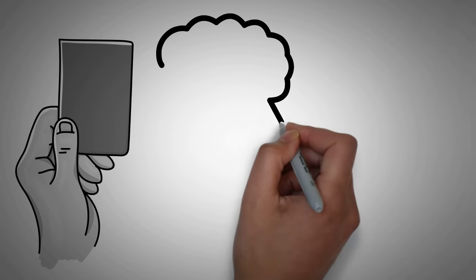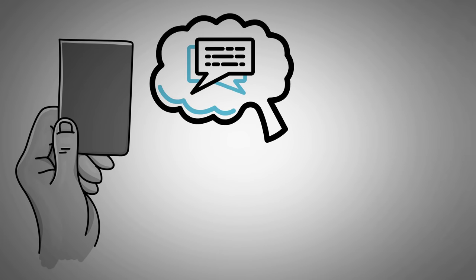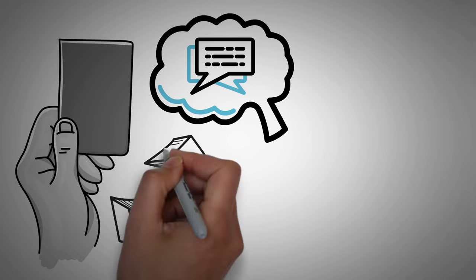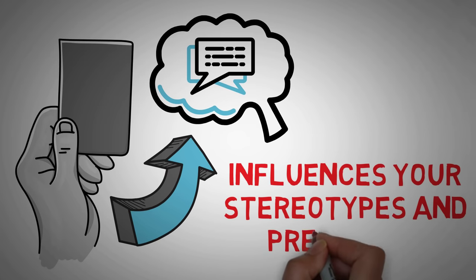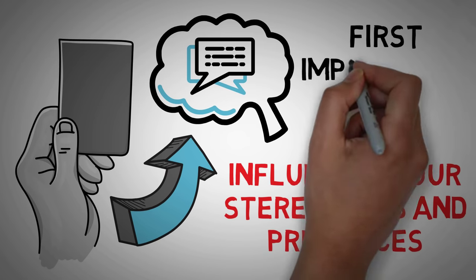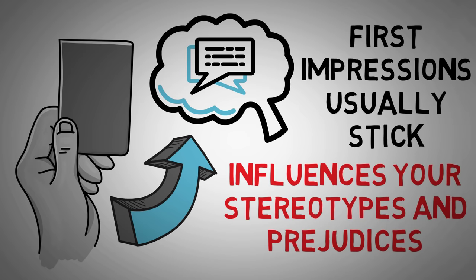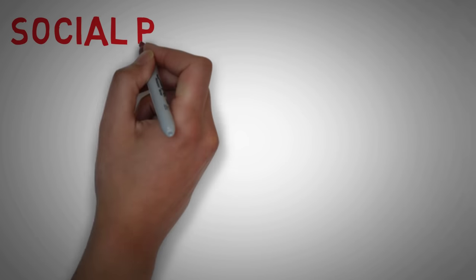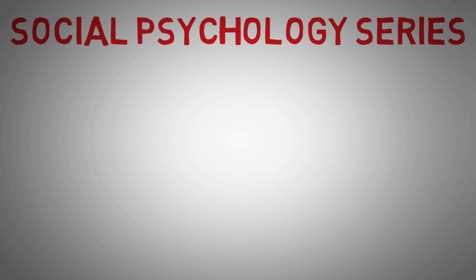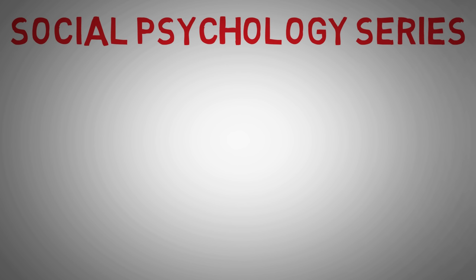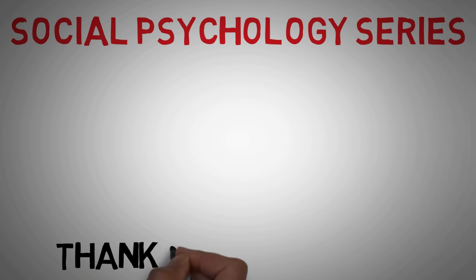As a review: a schema is like an index card of what you know about something. Schema theory is how your brain organizes information, kind of like a filing cabinet. Because of this, schemas influence your stereotypes and prejudices. Lastly, you can change your schema, but first impressions usually stick around. I hope you enjoyed this video on schemas, and I encourage you to watch all of the other videos in my social psychology series to get a full grasp of how the human brain works in conjunction with other people. Thank you so much for watching.